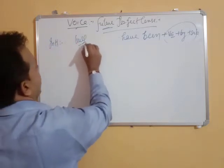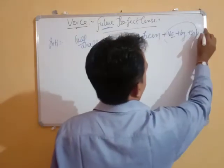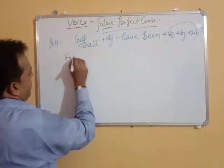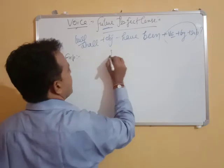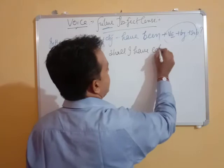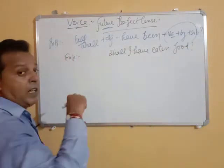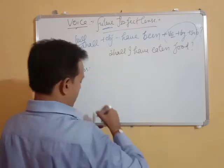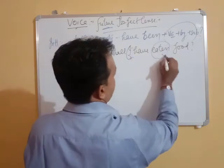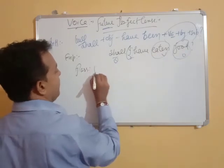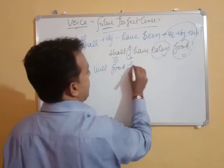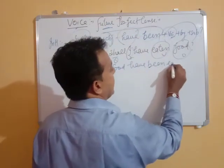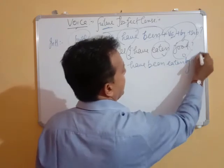For the interrogative form, 'will' or 'shall' comes first, then the object, and a question mark at the end — this is the only difference between affirmative and interrogative. Example: 'Shall I have eaten food?' becomes in passive: 'Will food have been eaten by me?' Here 'I' is the subject, 'eaten' is the verb, 'food' is the object, and 'me' replaces 'I'.